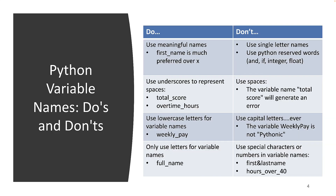Now, some things about variable names in Python — there are do's and don'ts. First, use meaningful names. For example, first_name is much preferred over a simple single-letter variable like x. As your code gets more complicated, using names like x might save typing, but your code becomes much harder to understand. Avoid single letter names like x, y, z, q, and r — use words that make sense. Also, never use Python reserved words, and don't use things like "integer" or "float" as variable names, since Python treats those in a special way and it could cause errors.